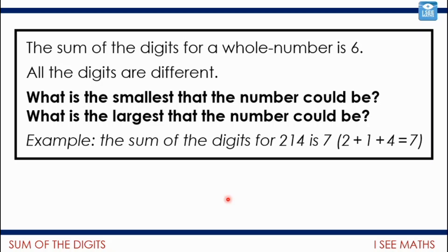Now that leads us into our challenge today. The sum of the digits for a whole number is 6. All the digits are different in this number. So what is the smallest that the number could be? And what is the largest that the number could be? Now I'm not going to give you 6 as one of the numbers. It has to be at least a two-digit number. But have a go and pause the video. And when we play again, you're going to see some example solutions there.